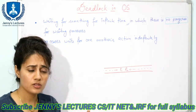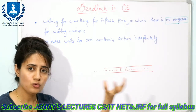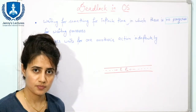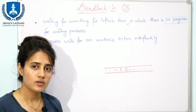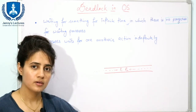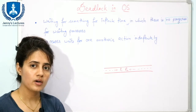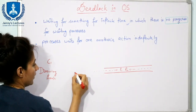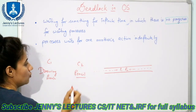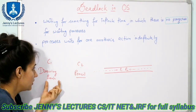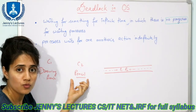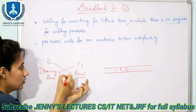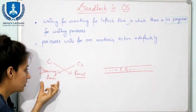Let us take one more example. Suppose two children want to draw something. On one table there is one drawing book and one pencil. Both children run to get them. One child C1 got the drawing book and child C2 got the pencil. Now neither C1 can draw nor C2 can draw, because C2 only has the pencil and is waiting for the drawing book, while C1 has only the drawing book and is waiting for the pencil.